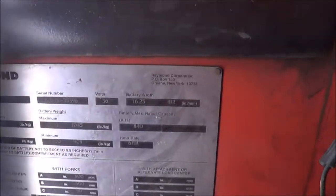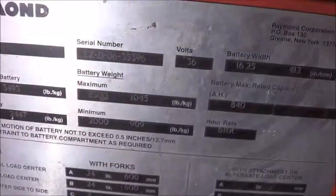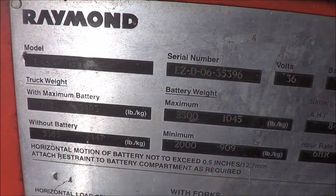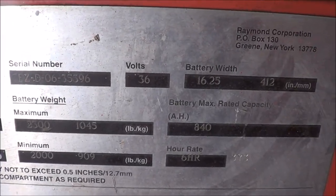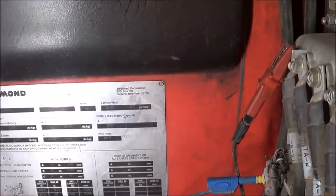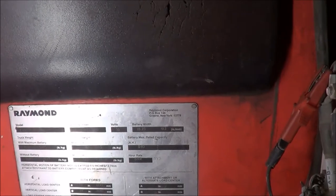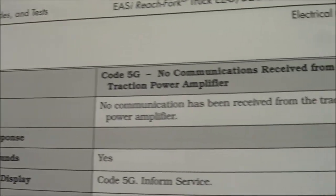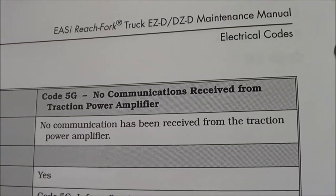Alright, working on another Raymond. This time it's an ECR-40 TT, serial number EZD06. This time it's gonna be an AC drive motor and the problem with this one is intermittent code 5G. So we look at the code on this truck. You look at the book, 5G is a no communication received from the traction power amplifier.